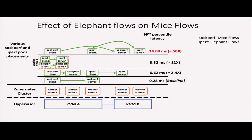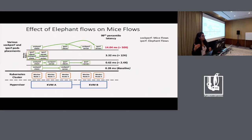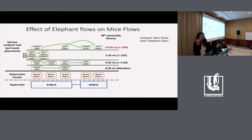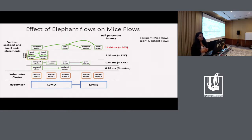In the baseline scenario, the 99th percentile for the Sockperf client is around 0.28 milliseconds. As we play around with the placement of elephant flow pods, the latency keeps increasing. In the worst case scenario, when Sockperf and Iperf clients are deployed on worker nodes in Hypervisor 1 and communicating with their respective servers on worker nodes on Hypervisor 2, the latency is 50 times that of the baseline scenario. This just validates the theory.